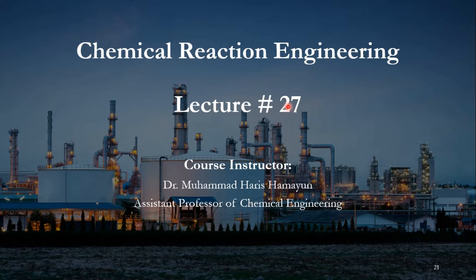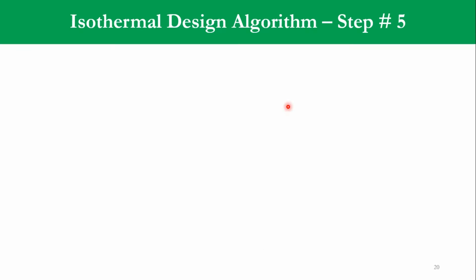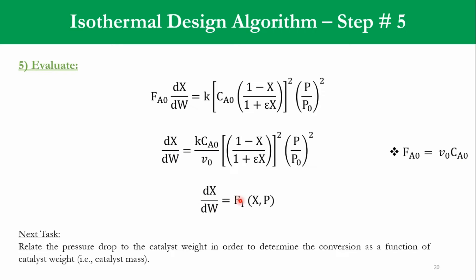This lecture is continuation of the previous lecture, which was lecture number 26, based on pressure drop in the reactors. If I take you back, this equation dx over dw is a function of x and P. Our next task was to relate the pressure drop to catalyst weight in order to determine the conversion as a function of catalyst weight. So we will be doing that part today.